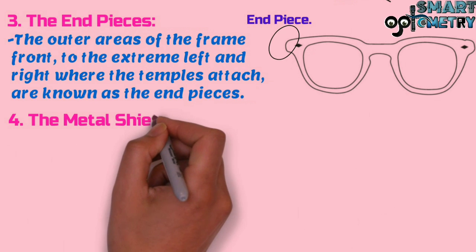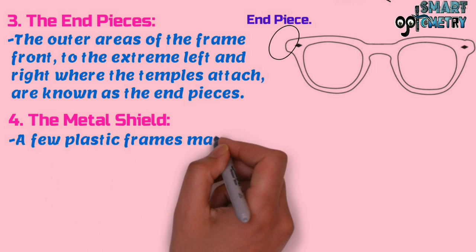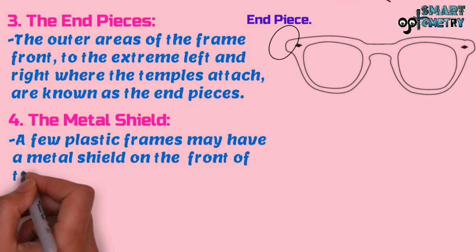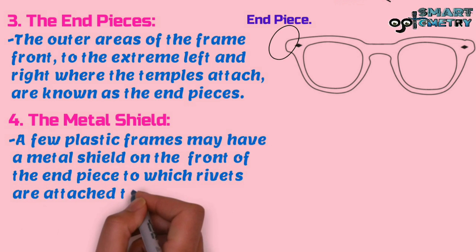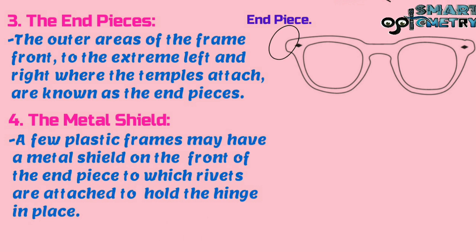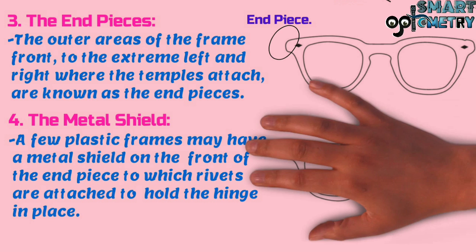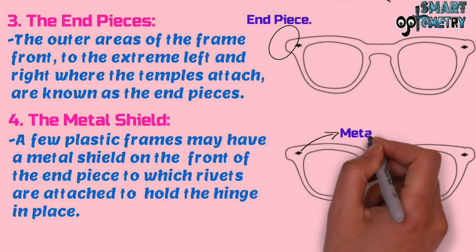Four, metal shield. A few plastic frames may have a metal shield on the front of the end piece to which rivets are attached to hold the hinge in place. Here in this figure you can see the metal shield.